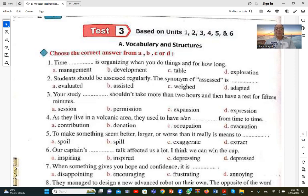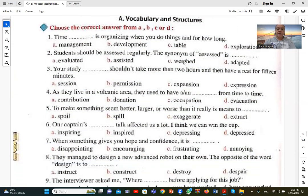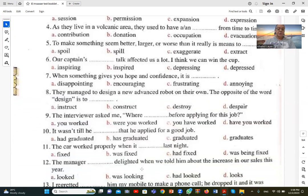Number seven. When something gives you hope and confidence it is encouraging. لما حاجة تعطيك الأمل والثقة. Encouraging B means something that encourages you. This means it gives you hope and confidence. Encouraging B is the correct answer.